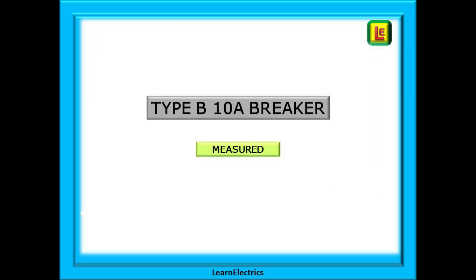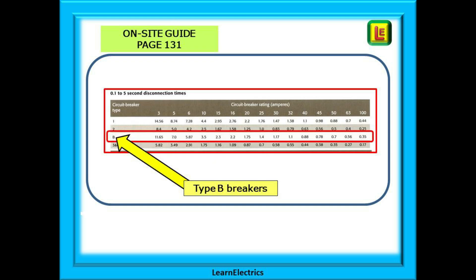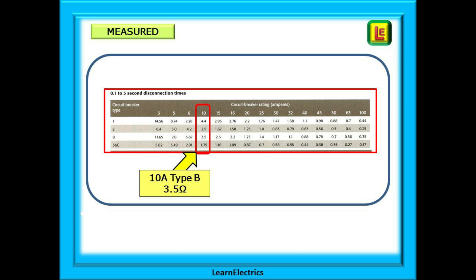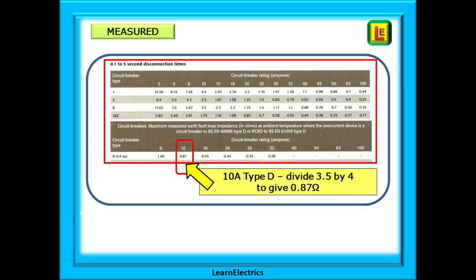If we now apply the same rules to find the measured ZS of a 10 amp type B breaker: 35 divided by 10 is 3.5 ohms. We can check this in table B6 — find the row for type B breakers, then find 10 amp breakers, and we have our comparison value: 3.5 ohms. For a type C breaker, divide the type B value by 2: 3.5 divided by 2 is 1.7 ohms for a type C 10 amp breaker. For a type D 10 amp breaker, divide by 4: 3.5 divided by 4 is 0.87 ohms, as per table B6.